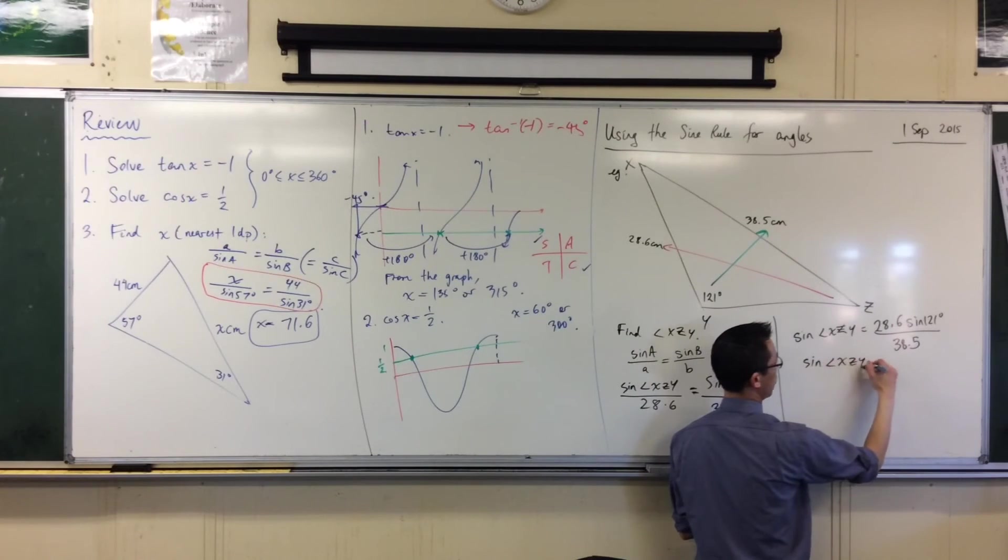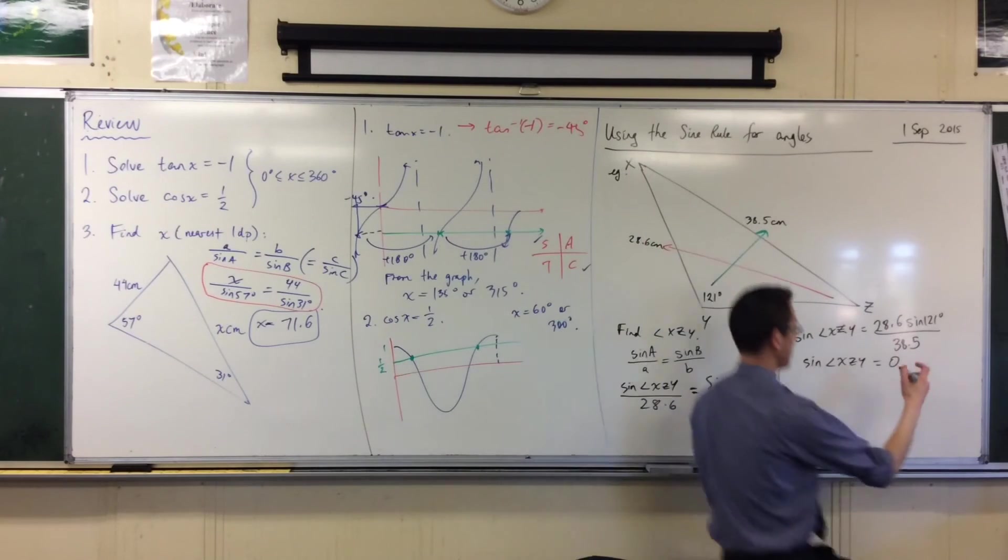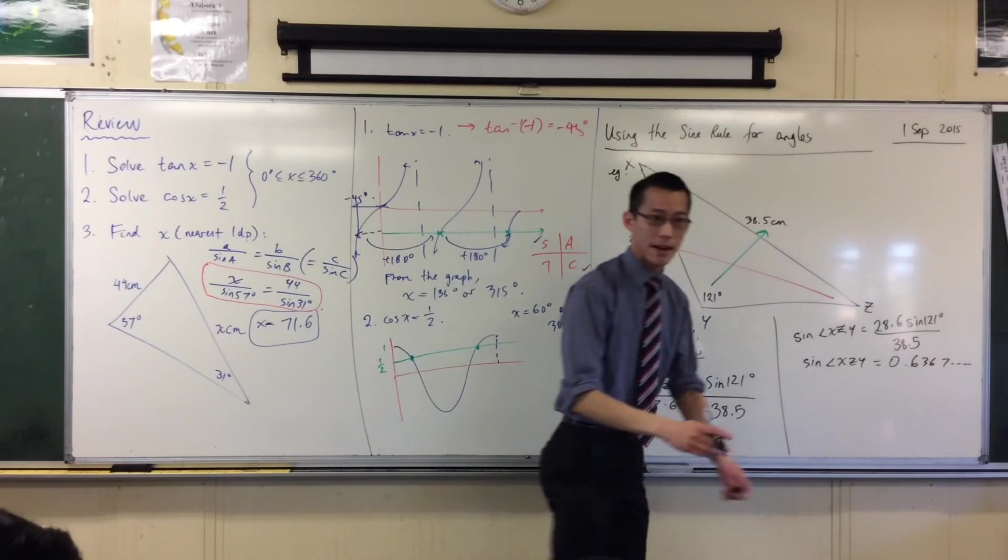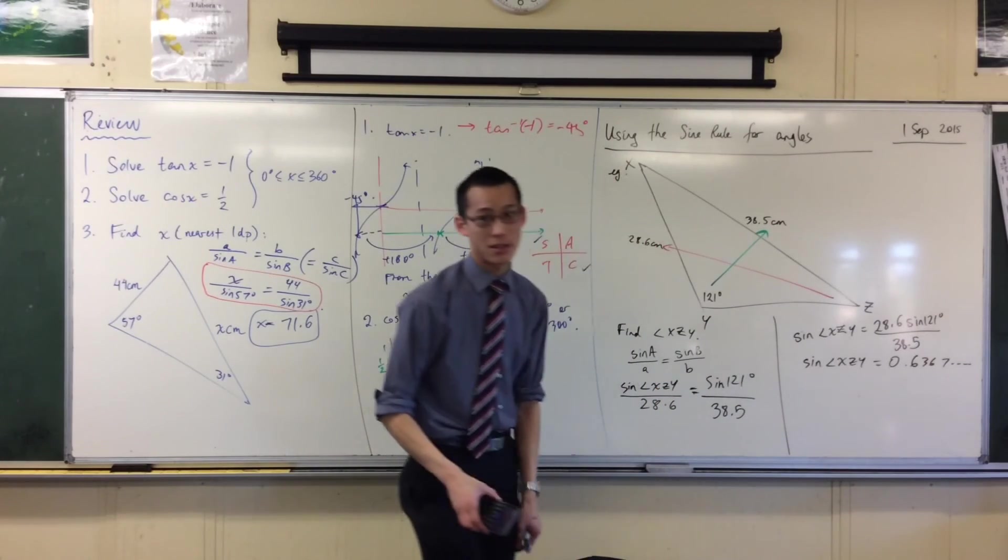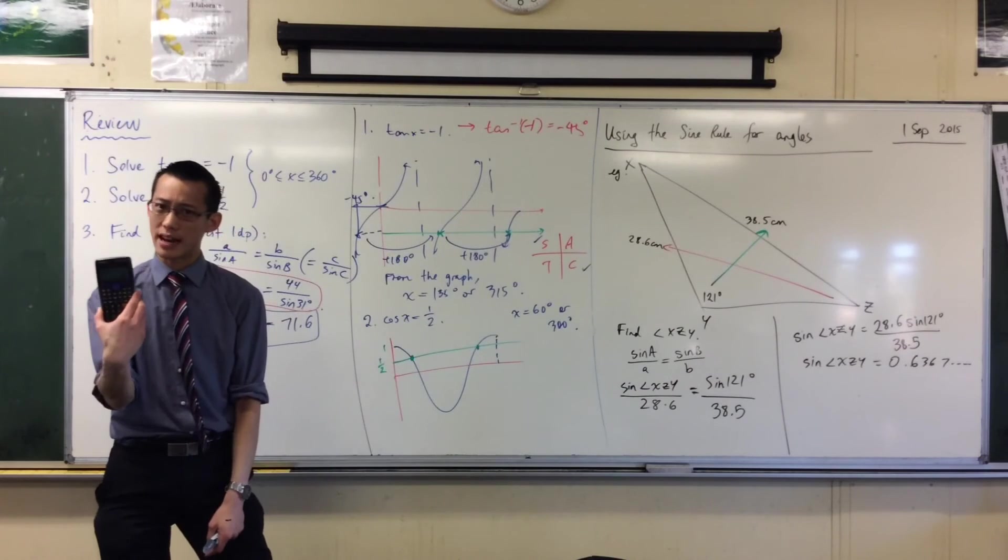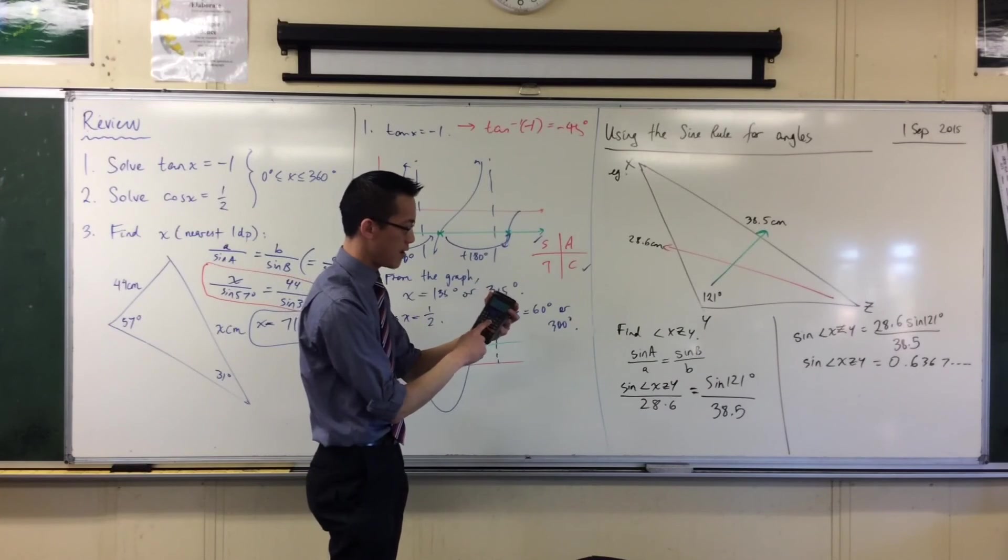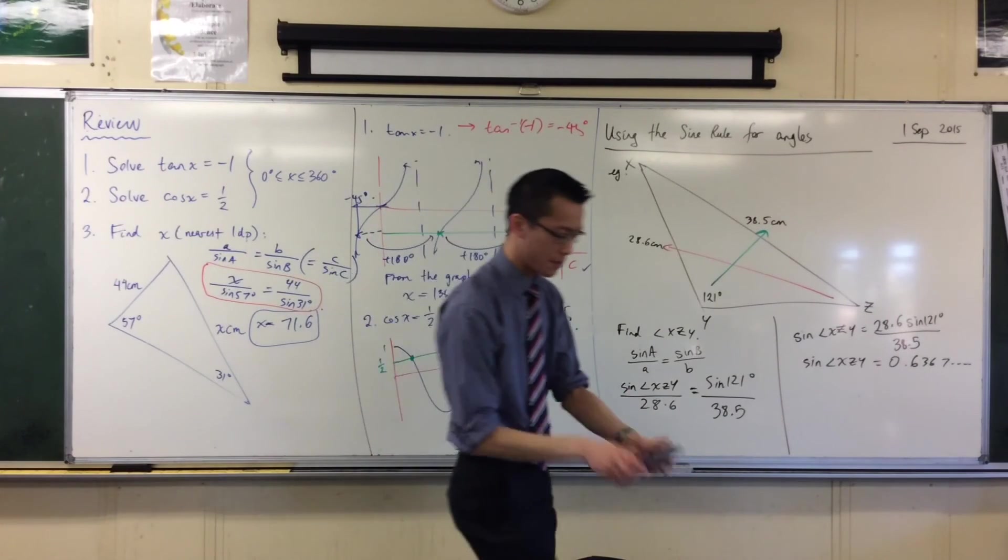Sine XZY equals 0.6367, etc. So that's there in my calculator. While it's still there, I don't want to sine the angle. I just want the angle. So what am I going to do in my calculator? Yeah. I want to get rid of the sine, so I'll go sine inverse by using the shift button. And then you pop your answer in, and you get an angle out.